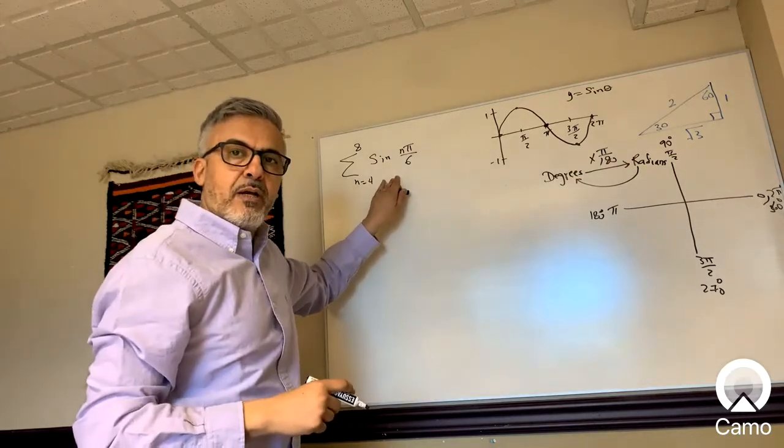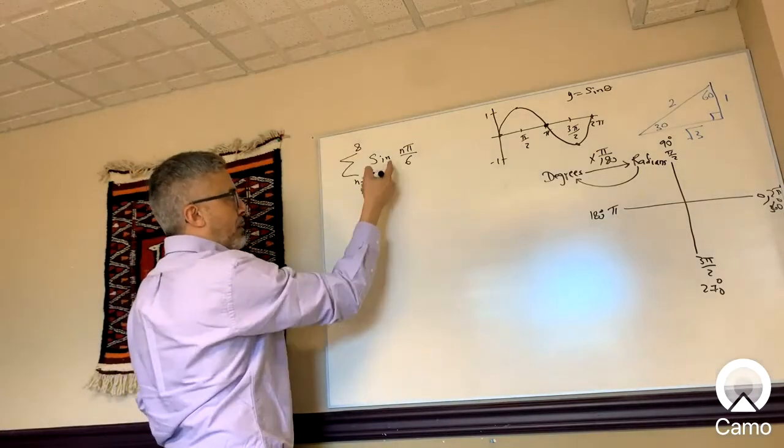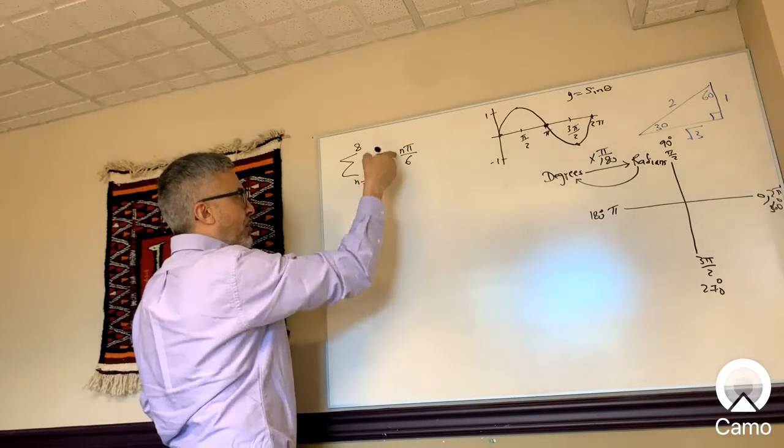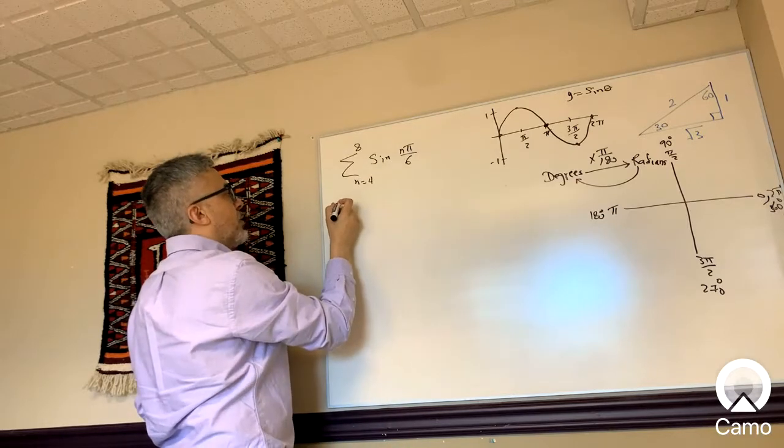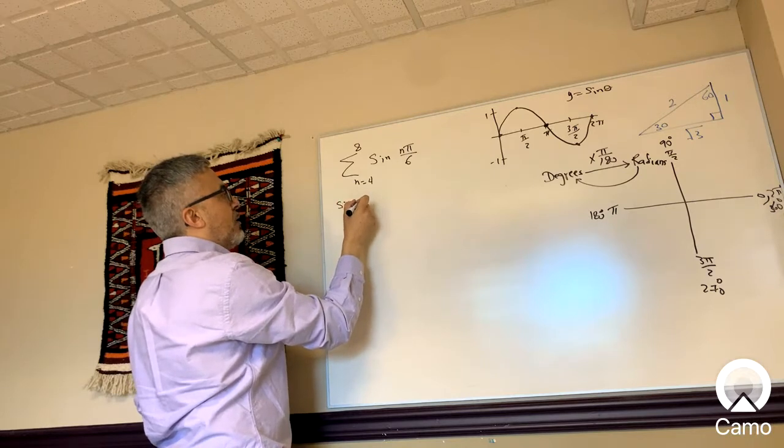So if I want to start this off, I need to expand it from four all the way to eight. I'm going to substitute in four for n, then five, six, seven, all the way to eight.